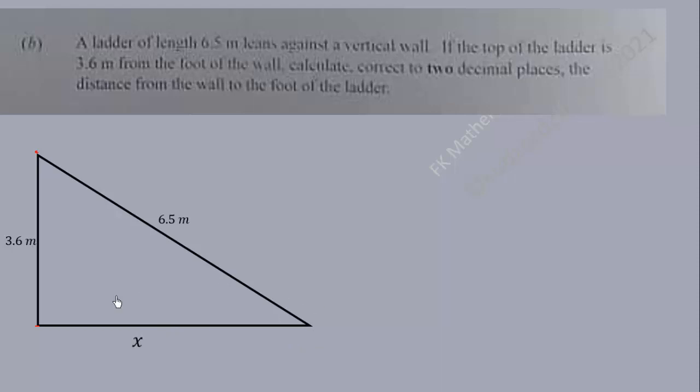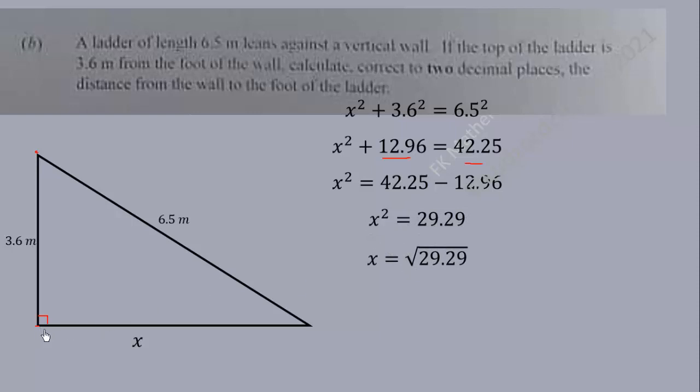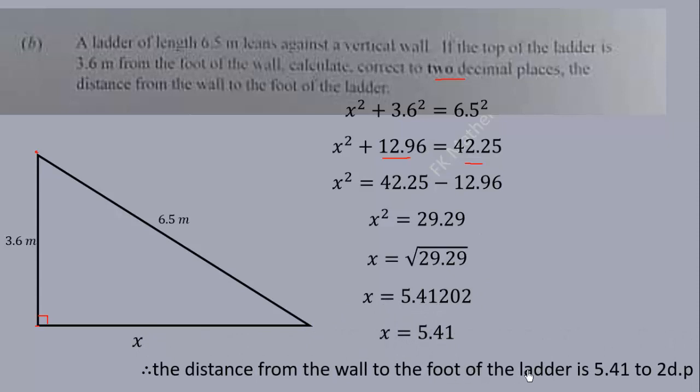So we can use Pythagoras theorem because it's a vertical wall. This is 90 degrees. So by Pythagoras, X squared plus 3.6 squared should be equal to 6.5 squared. Now calculator work here. So we solve for X squared. We take the square root of both sides. We are taking positive square root because we are dealing with distance. So that will give us 5.41202. You are asked to correct it to two decimal places, so first work at least more than two decimal places. Then now you can round it to two decimal places. So it means the distance from the wall to the foot of the ladder is 5.41 to two decimal places.